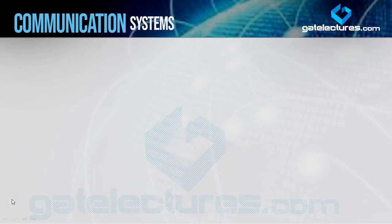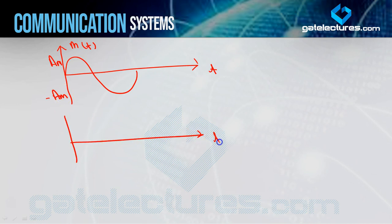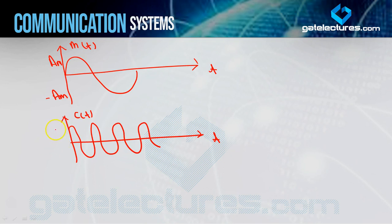For that, we will consider one message signal M(T) — a sinusoidal waveform — where the maximum amplitude is A_M and the negative side is minus A_M. We also consider one carrier signal C(T), which is a cosine waveform: A_C cos(ω_C T), with maximum amplitude A_C and negative side minus A_C.